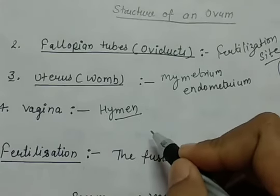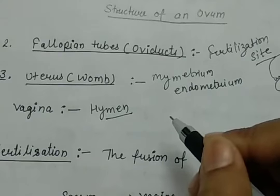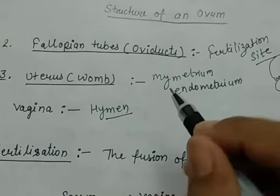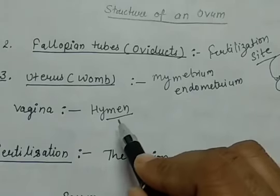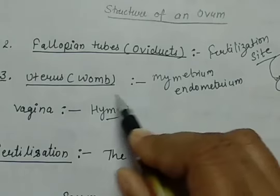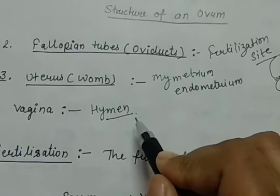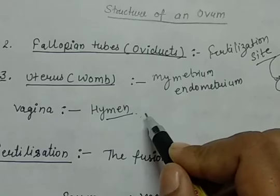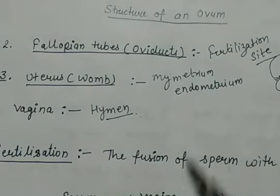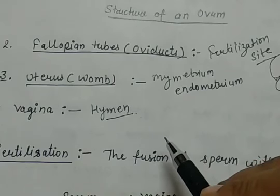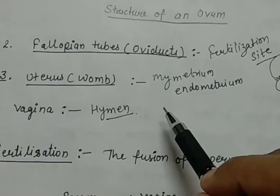Intercourse is a process in which the male sex gametes enter inside the body of the female. At the first intercourse, the membrane called the hymen breaks. However, because of many activities like horse riding and bicycle riding this membrane can also be broken. It usually gets ruptured by physical exercise during childhood or at the first time of intercourse. The opening of the vagina is completely separate from that of the urethra — urine excretion and the vaginal orifice have two different openings.